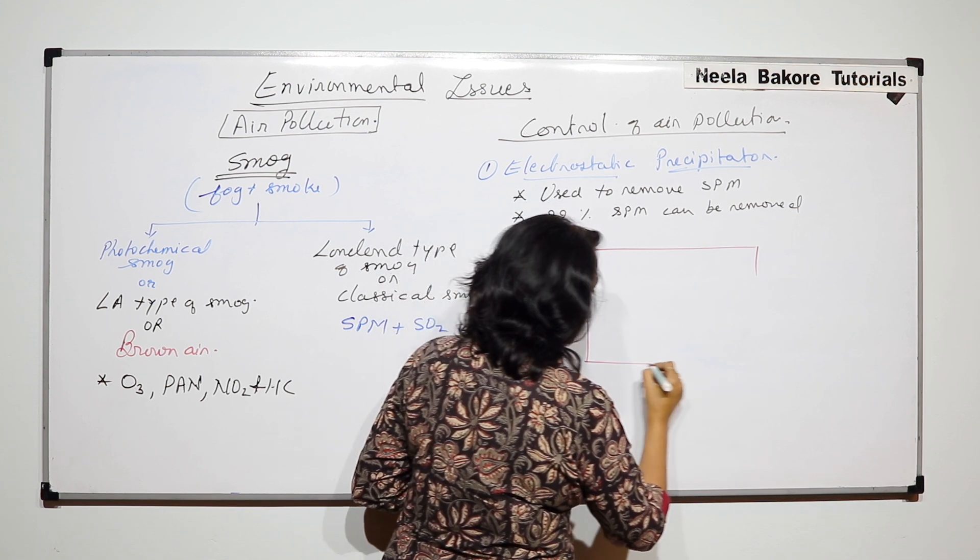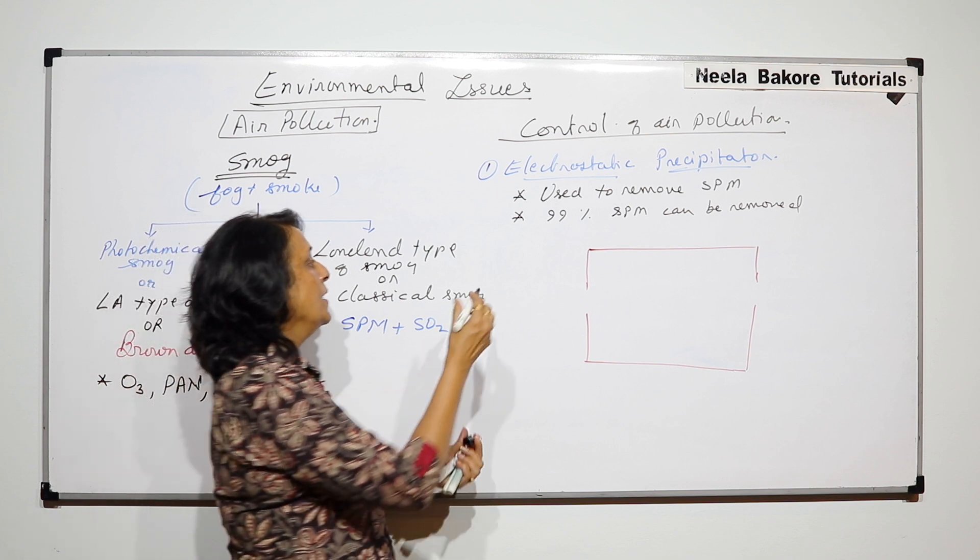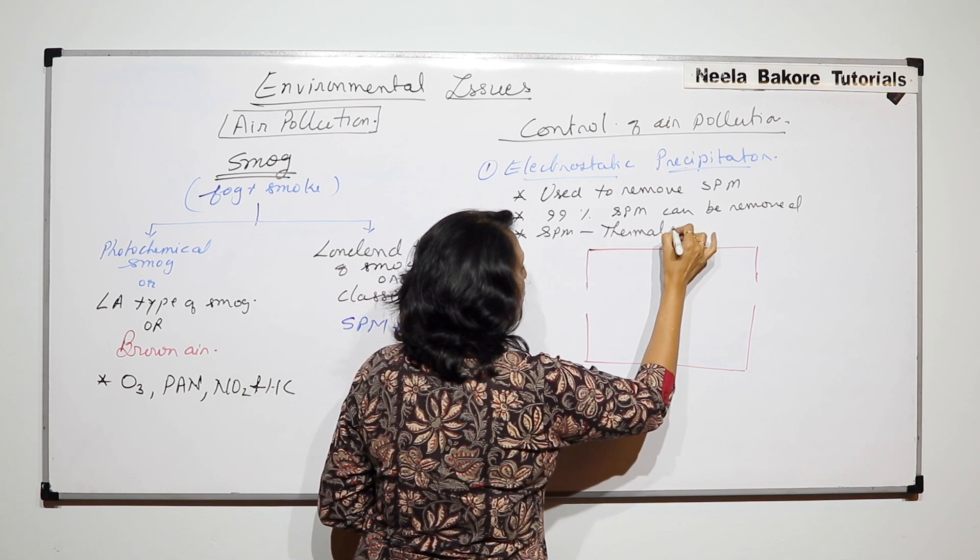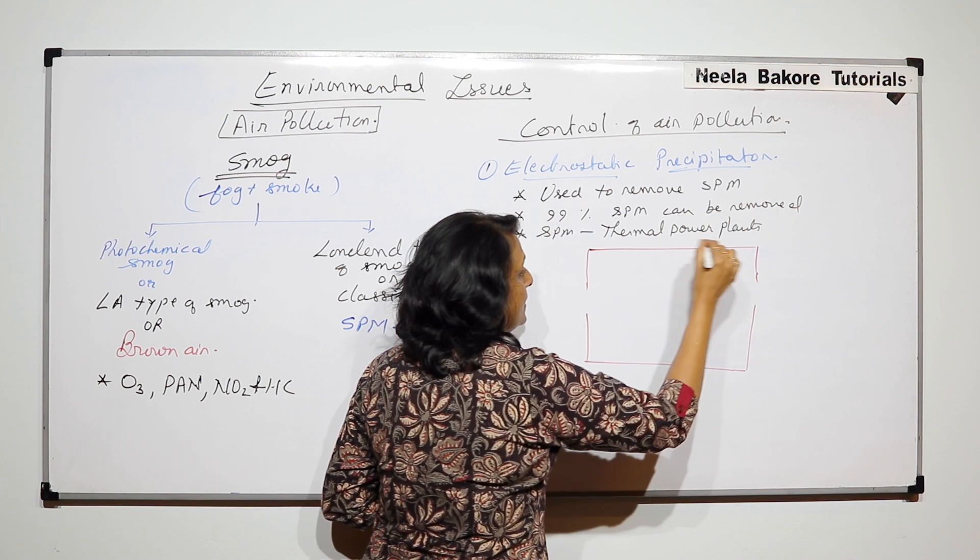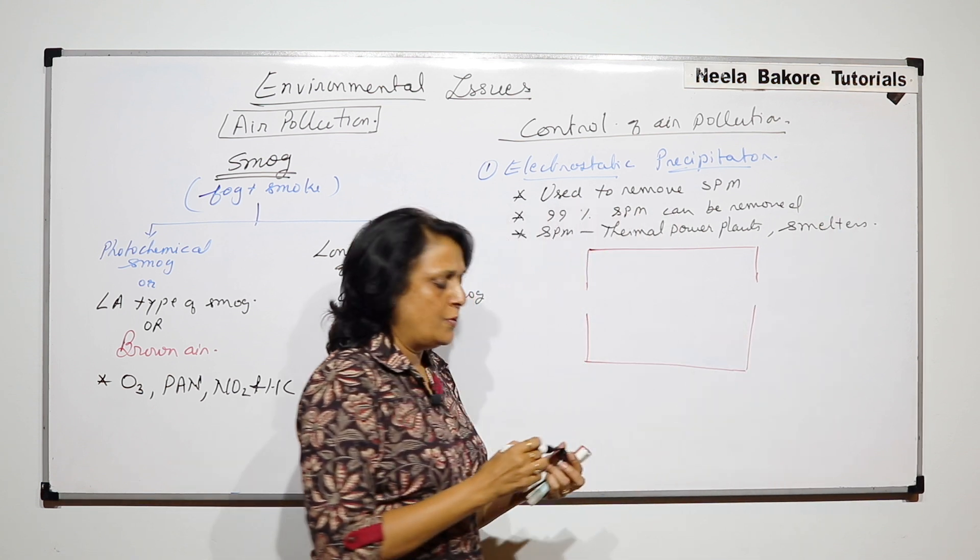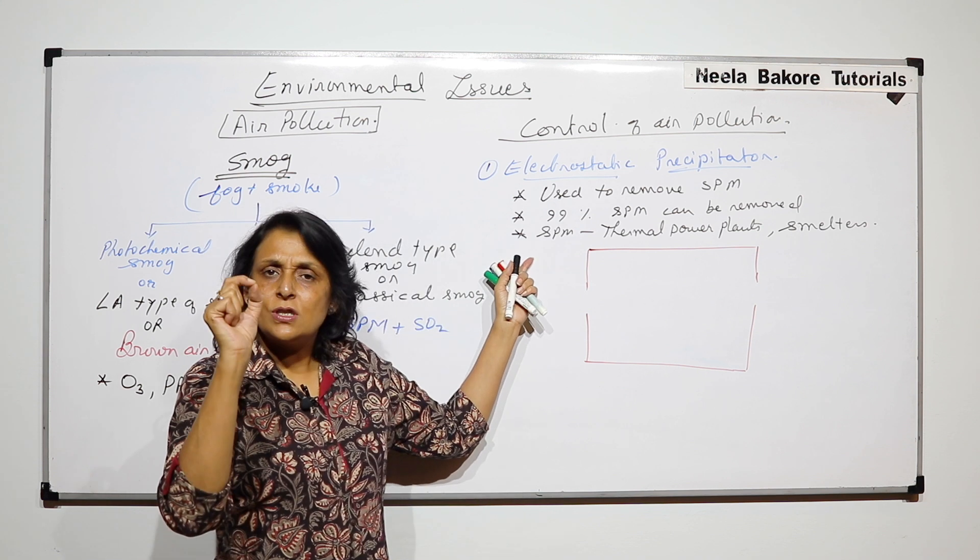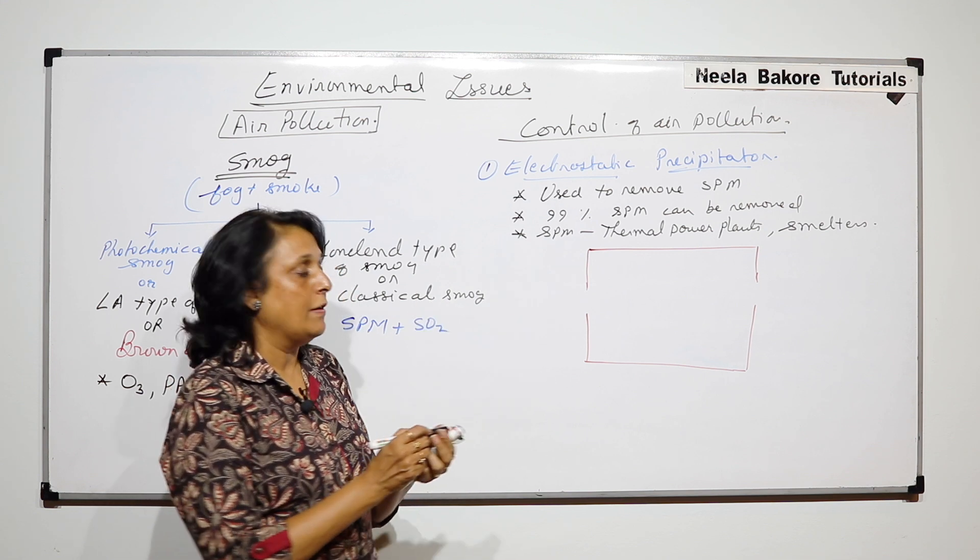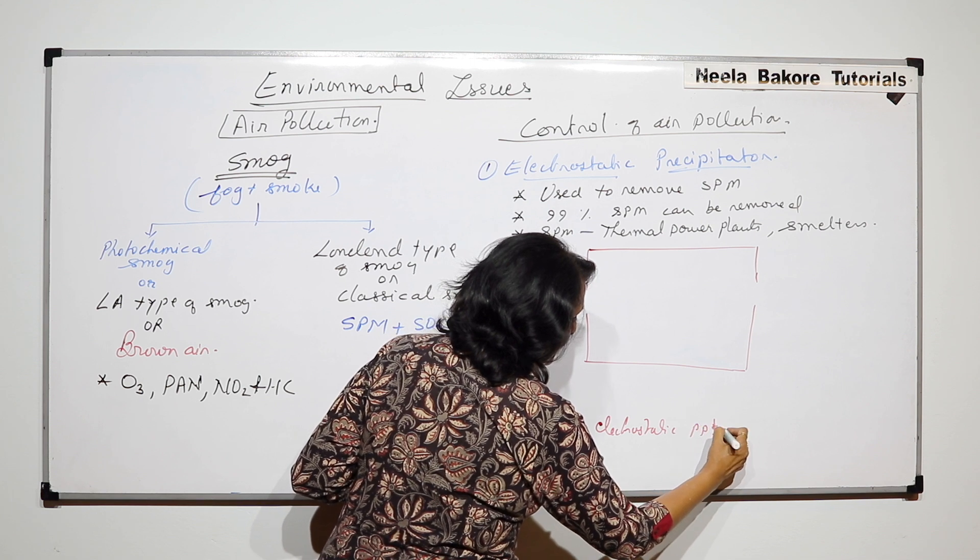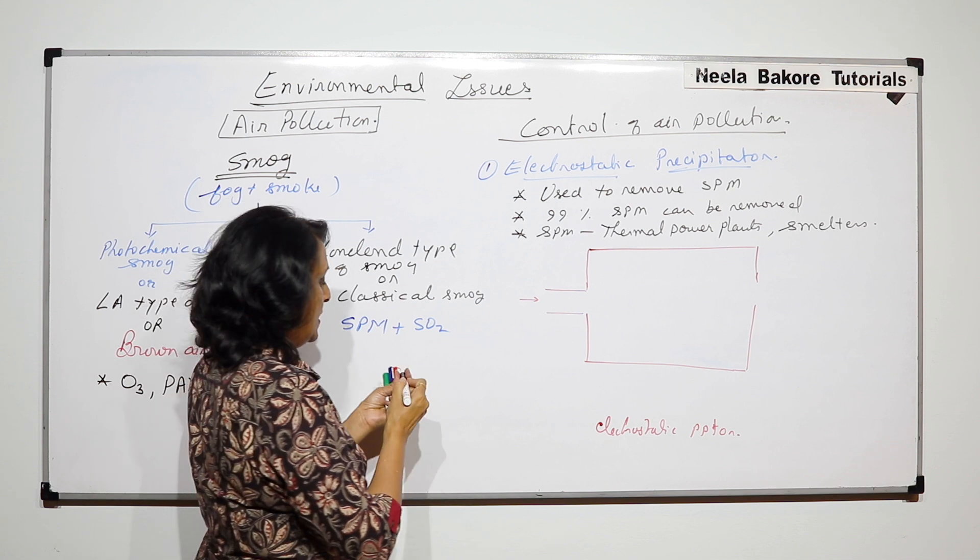And as I said, its size would depend on from where is this suspended particulate matter coming. So where does this SPM come from? It comes from thermal power plants, suspended particulate matter is also released from smelters. That means wherever in the factory something is being crushed, some fuel is being used, then those tiny particles are released in the air. So now if this is our electrostatic precipitator, then that polluted air is allowed to enter into this device.